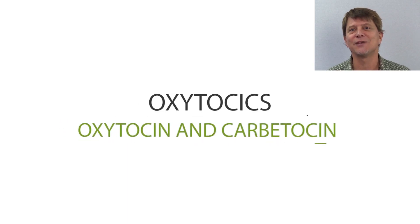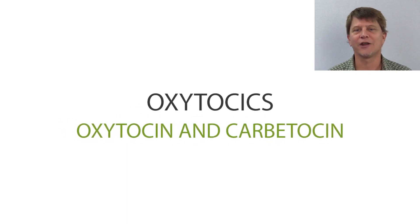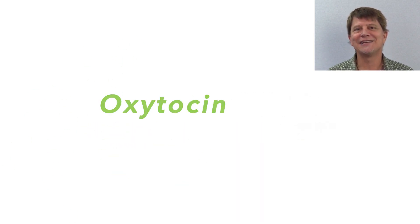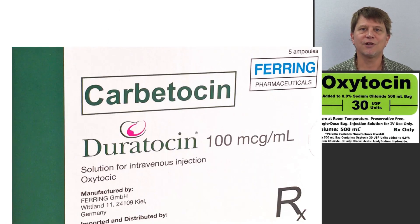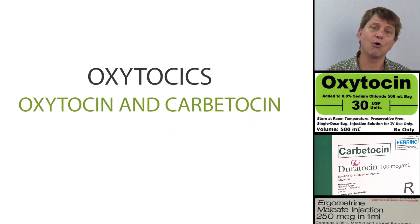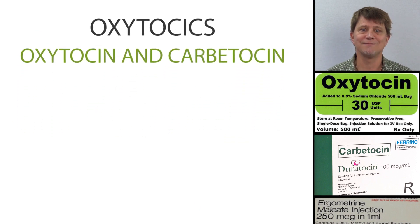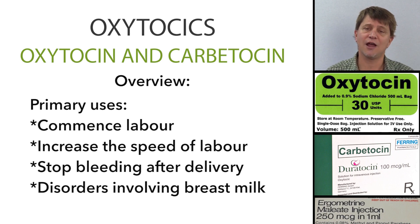Thanks for joining me as we get a good drug picture of the oxytotics. Oxytocin and carbutocin are intravenous or intranasal drugs that mimic the actions of the endogenous hormone oxytocin. They directly affect the neurotransmitter sites that stimulate the contraction of the uterus.